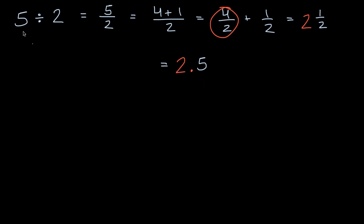Now another way you could approach this is to say five divided by two is the same thing as 50 tenths divided by two. So let me use a different color here. Instead of a five, I could say five is the same thing as 50 tenths divided by two.